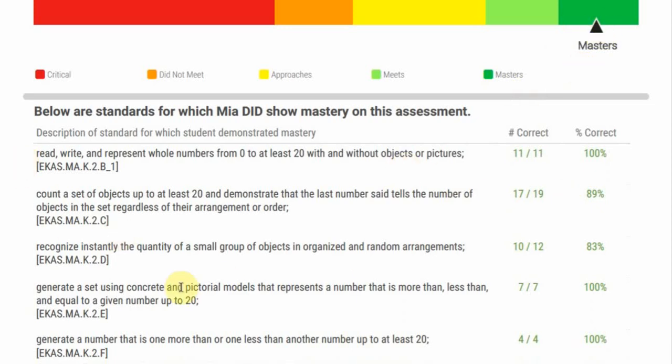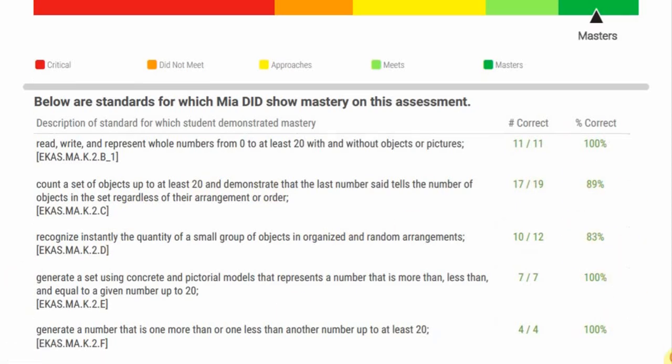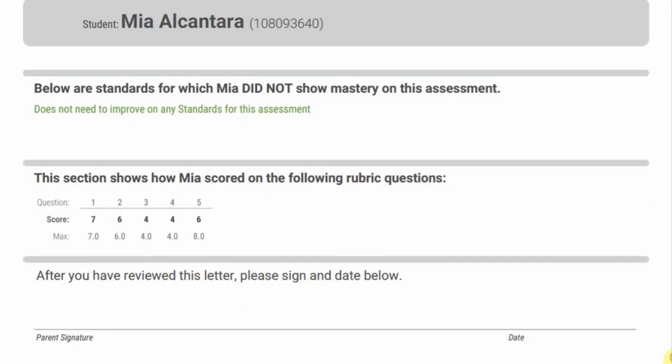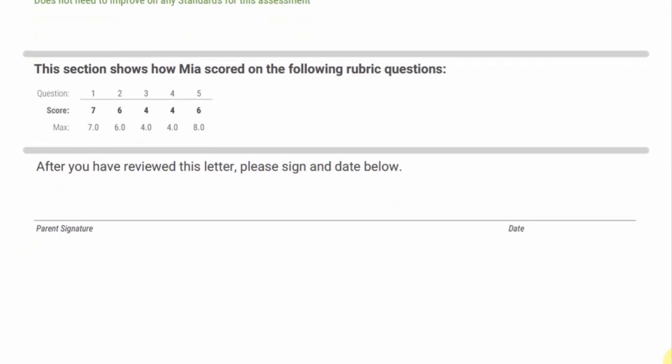But for example, the student may have not been able to count up to 20 for a specific number or tell what the number of objects was correctly. So 17 out of 19, they got 89 percent. In this case, 83 percent. So this shows what she did master, and it doesn't show she mastered everything so there was nothing under did not master.